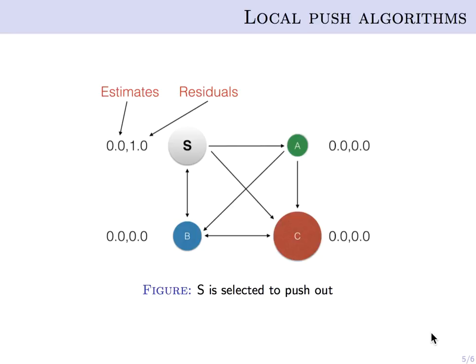In this work, we explored a different approach called local push algorithms. It is a well-known method for computing personalized PageRank, and it's also very easy to implement. However, its behavior in the dynamic setting is not very well understood. As a comment, one can view the local push algorithms as a localized version of power iteration.